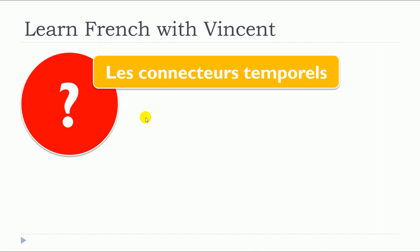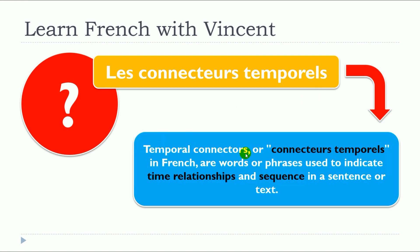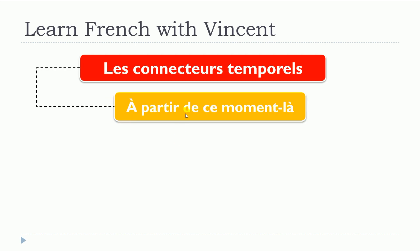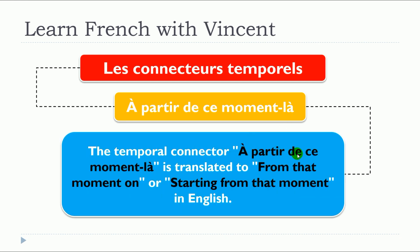The main question is: what are les connecteurs temporels? Temporal connectors, or connecteurs temporels in French, are words or phrases used to indicate time relationships and sequence in a sentence or a text. This lesson is about à partir de ce moment-là. The temporal connector à partir de ce moment-là is translated to 'from that moment on' or 'starting from that moment' in English.